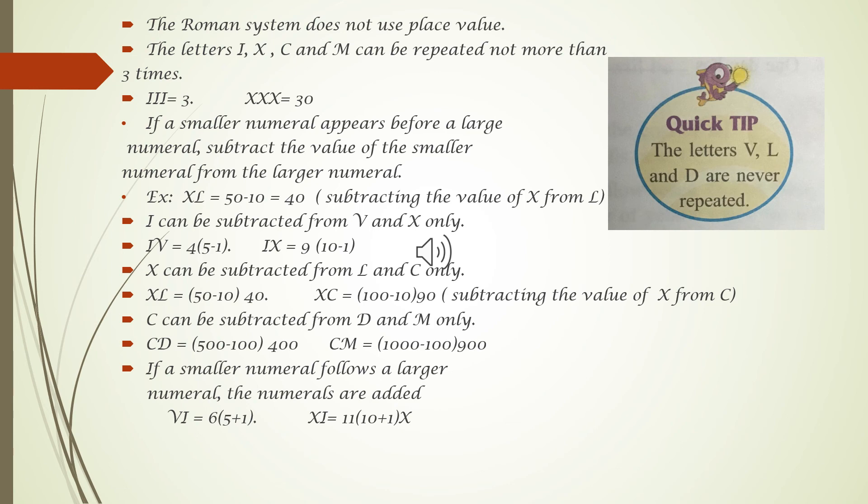C can be subtracted from D and M. CD: C smaller value stands before the greater value D. So, we need to subtract. 500 minus 100 is equal to 400. CM: C value 100, M value 1000. So, 1000 minus 100 is equal to 900.